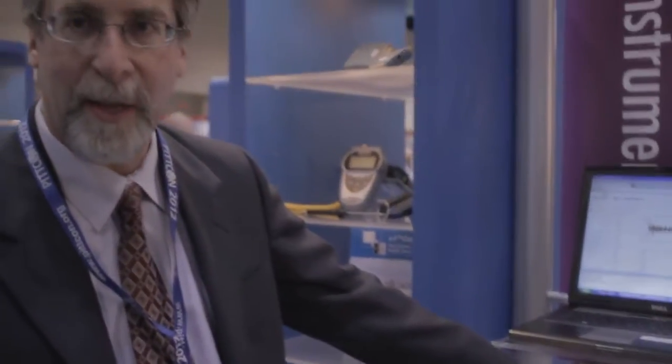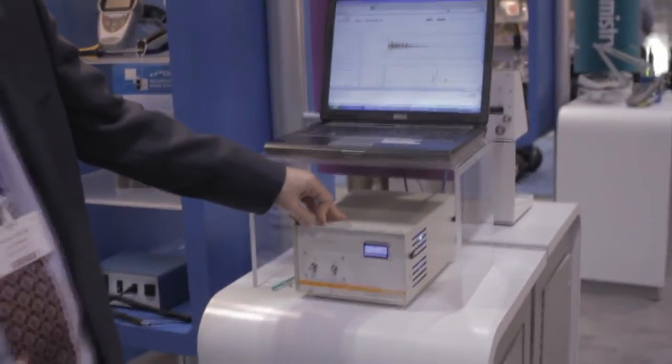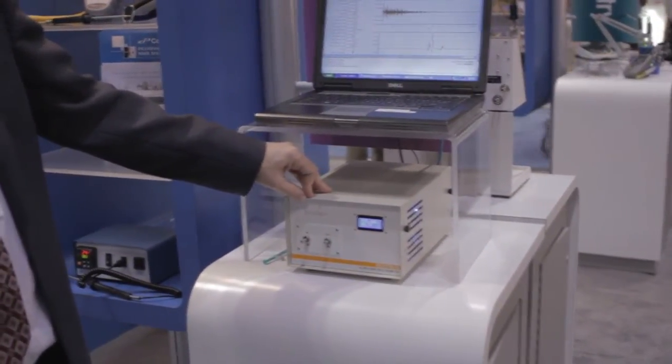The box doesn't have any controls on the front panel, but on the back side there's an ethernet connection. So it goes right on to the local network in your lab. And then you control the spectrometer using a web browser on any computer that's on your network.